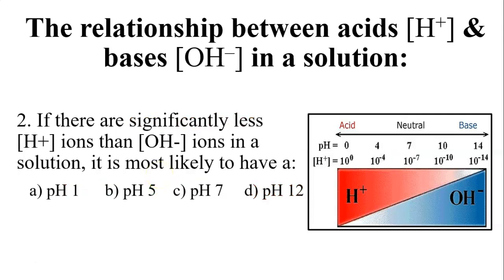Question two says, if there are significantly less hydrogen ions than hydroxide ions. So if we're looking at this continuum between acids and bases, we're looking over here, that there are significantly less hydrogen ions compared to hydroxide ions. So that's absolutely not a pH of one, because that would be significantly more, right?